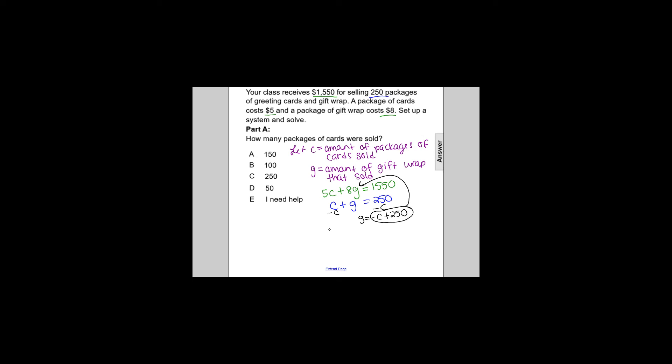So now we're going to have the equation. We're going to have 5C plus 8, but not times G anymore. We're going to have times the quantity negative C plus 250 equals 1,550. So we can solve this equation for C. We'll distribute 8, so that will give us 5C plus or minus, or plus negative, but we'll just go right to minus 8C. And then plus 8 times 250 is 2,000.